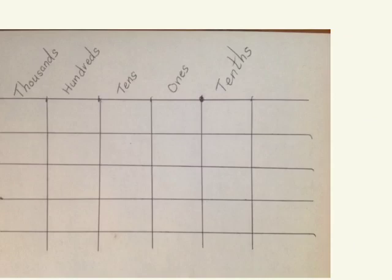This is lesson 7: Round a given decimal to any place using place value understanding and the vertical number line.